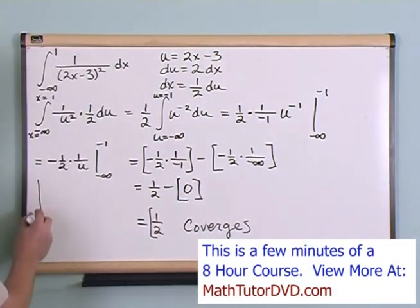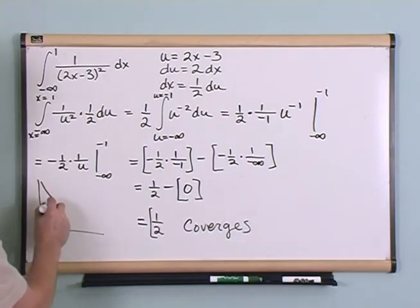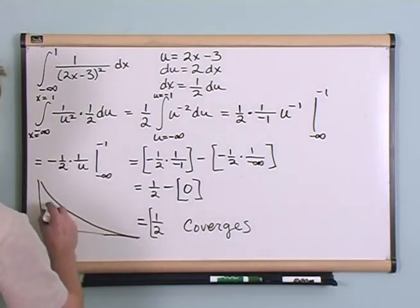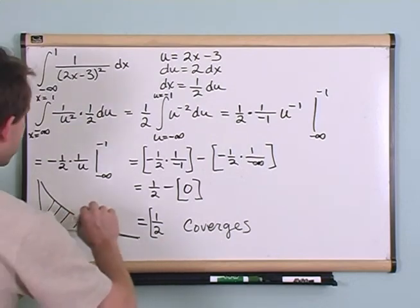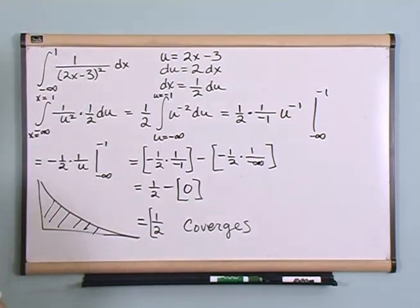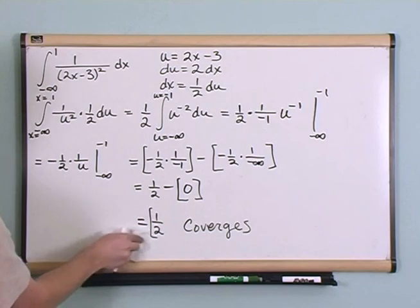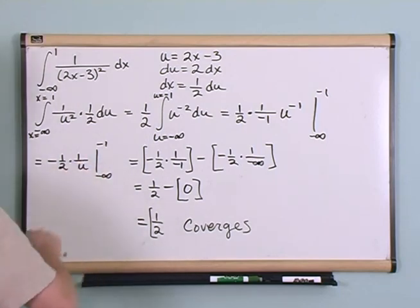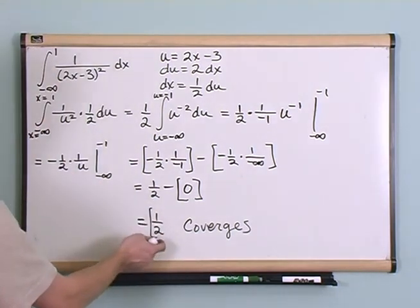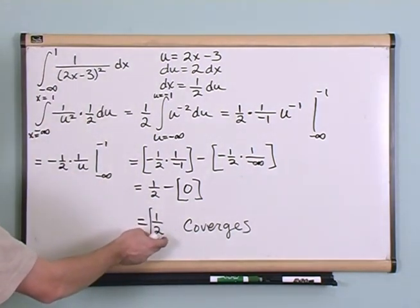This would be an example of some kind of integral where it went down so close to zero so rapidly that the actual area, even though you're integrating from minus infinity all the way up to a number, so you've got minus infinity on forever and ever and ever and you're adding up stuff, it actually converges to a solid one-half.